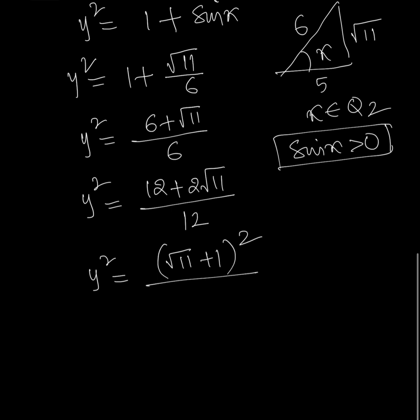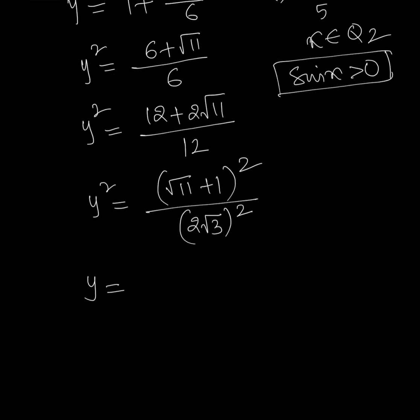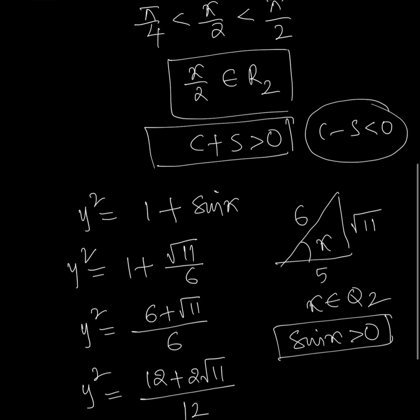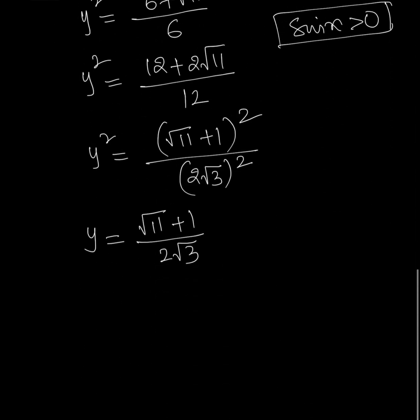The denominator can be written as (2√3)². Eliminating squares on both sides: y = ±(√11 + 1)/(2√3). However, from the condition cos(x/2) + sin(x/2) > 0, we know y > 0. Therefore, y = (√11 + 1)/(2√3).